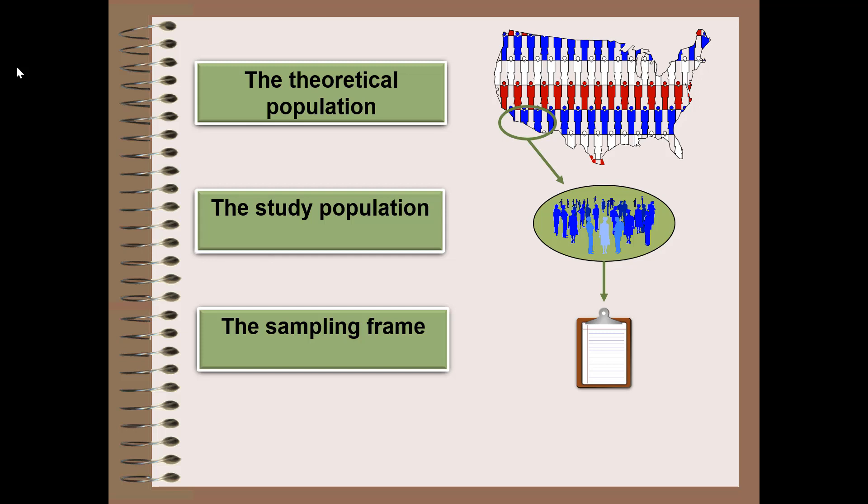From the sampling frame, we have to figure out who is going to be in the actual study, and who ends up being in the study is referred to as the sample. When we're talking about the sampling process, we're talking about going from the study population or the sampling frame to the sample that will end up being in the study.